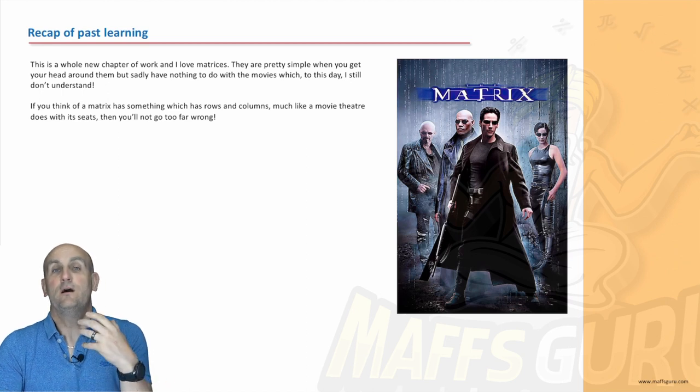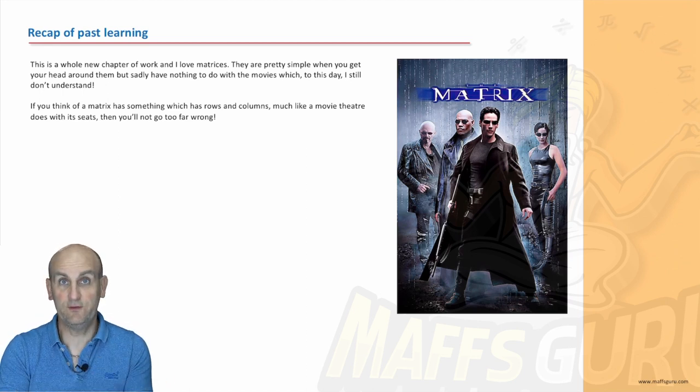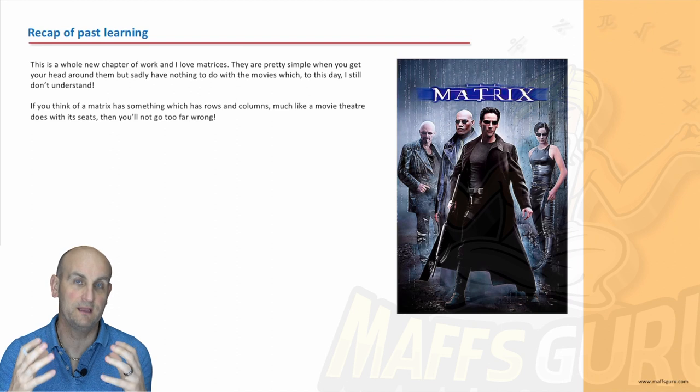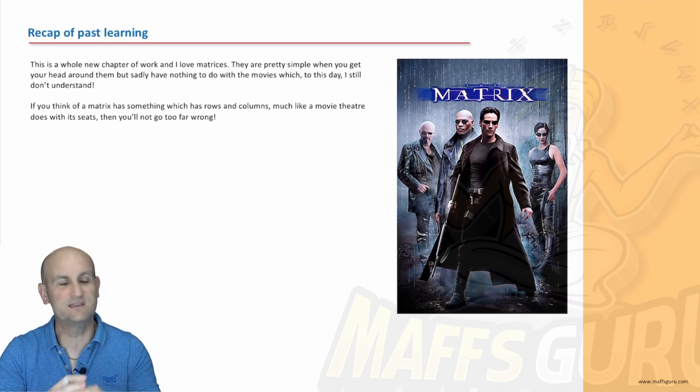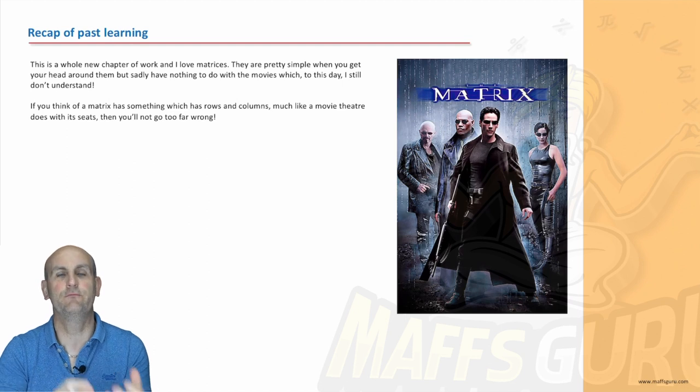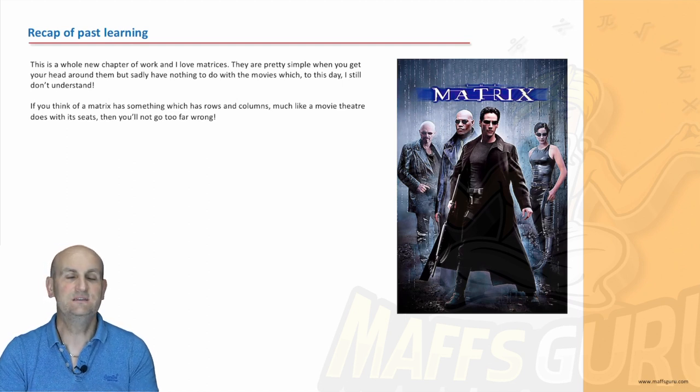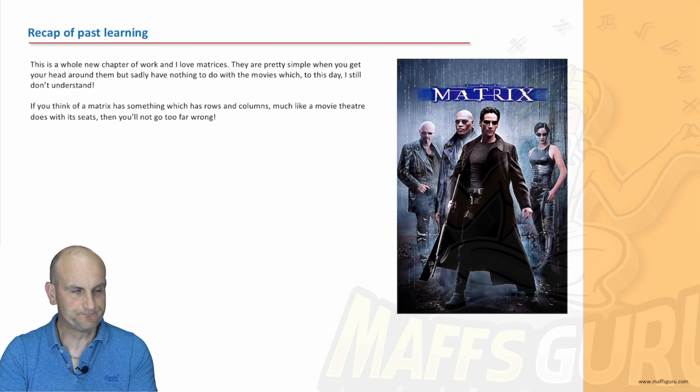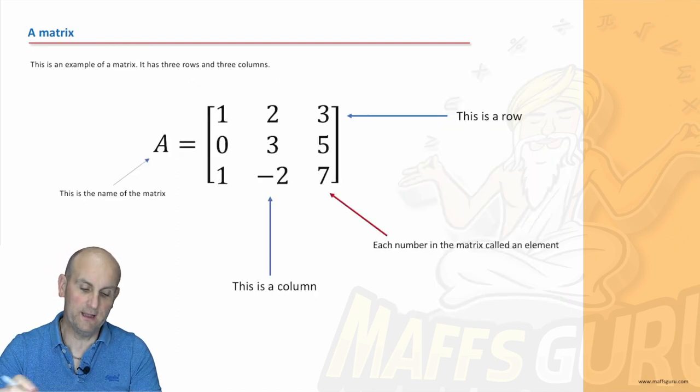Now obviously, matrices are quite important in this course. We do the foundation now. If you're going to do further maths, it becomes much, much bigger. Smash this now. You'll be sorted. But, matrices basically has something that has rows and columns. And my advice to you is if you think about it like cinema seating, where you have rows and seat numbers, you won't be too far wrong.